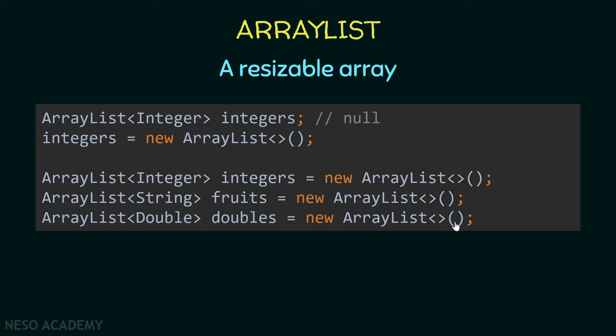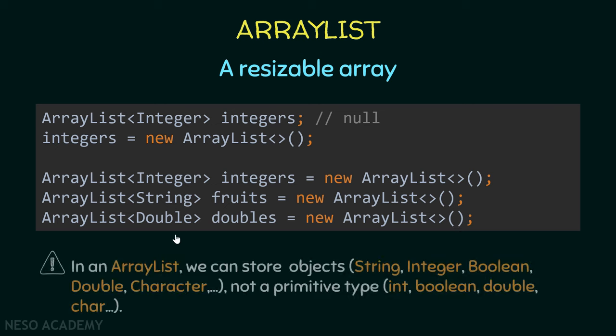When creating an ArrayList we do not specify the size. Previously when we created arrays we had to specify the size, but with an ArrayList the size grows automatically as we add elements. Note that in an ArrayList we can store objects — types like String, Integer, Boolean, Double, Character — but we cannot store primitive types like int, boolean, double, or char.